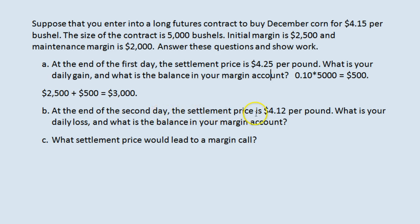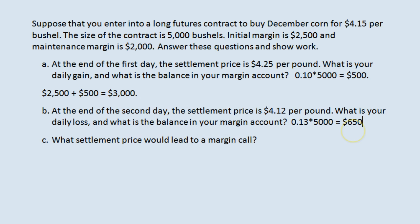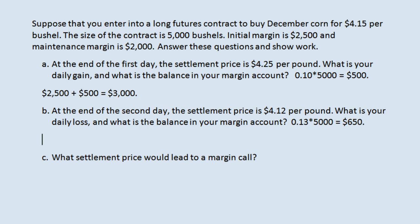At the end of the second day the settlement price is $4.12 per bushel. What is your daily loss? You have lost $0.13 in that day — only $0.03 total from the original price, but it's asking for the daily loss. $0.13 times 5,000 bushels is $650. That is a loss, so the balance in your margin account — you started the day with $3,000 — is now $2,350 at the end of the day.